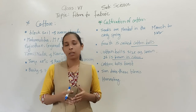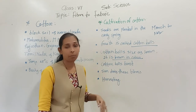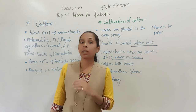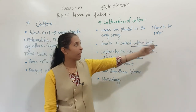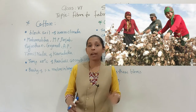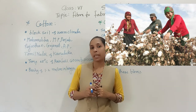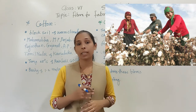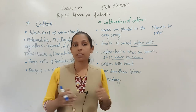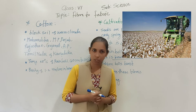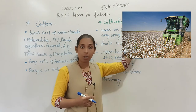Now it is the period of harvest. The cotton can be harvested by the handpicking method, as you can see in the image. If the field area is larger, then the cotton can be harvested using machines. This is all about the cultivation of cotton.